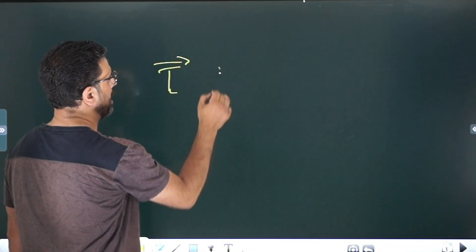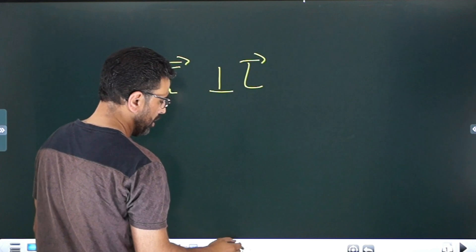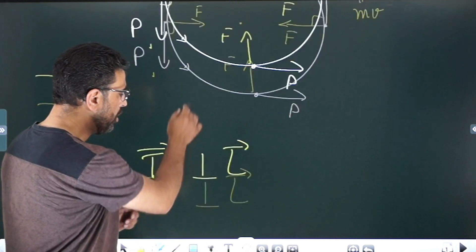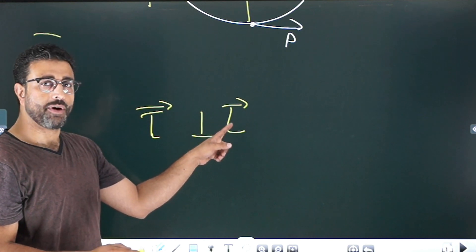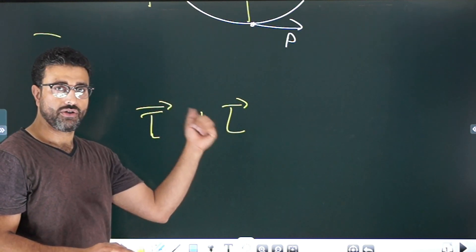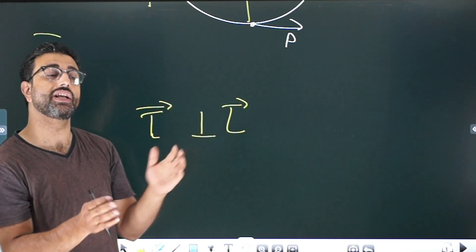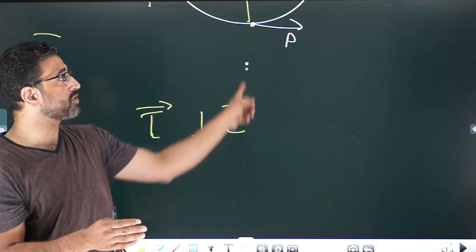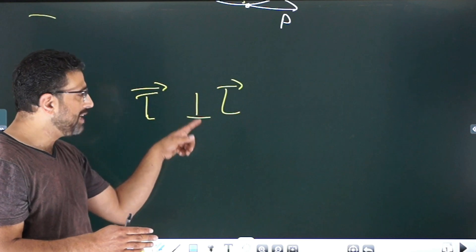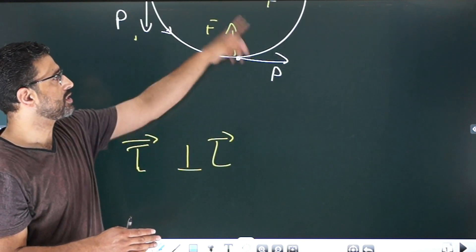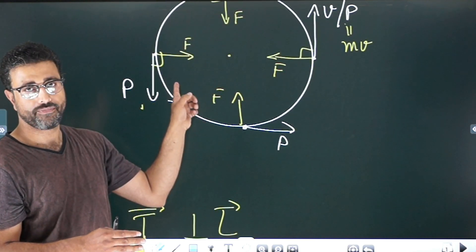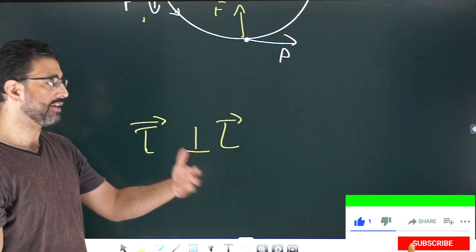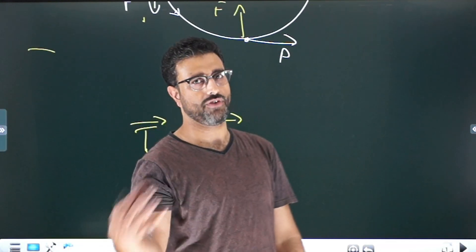Torque is perpendicular to angular momentum — exactly the same situation as before. Angular momentum will try to follow torque. Just like in uniform circular motion, if torque also moves away, then the process will continue in the same manner.